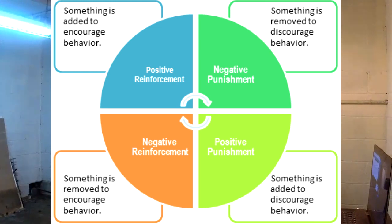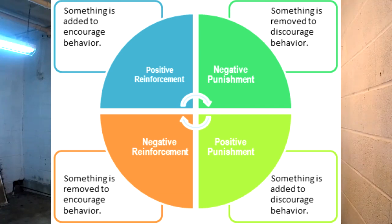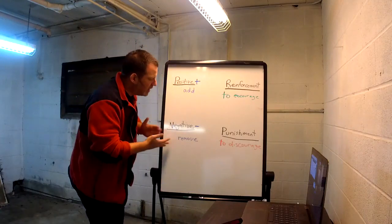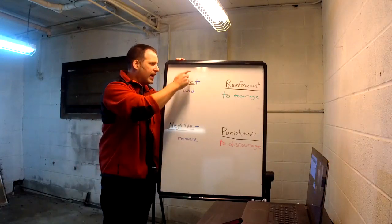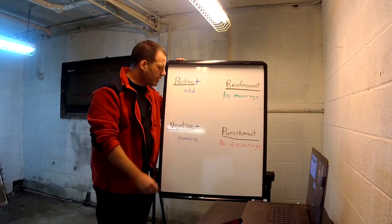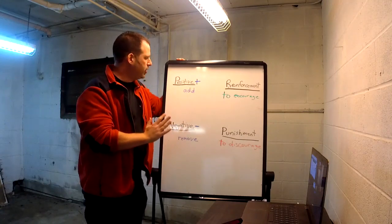What you want to remember with operant conditioning is to break it down into small pieces. The smaller pieces you break down the terminology, the easier it's going to make it for you. The first place people go wrong is with the words 'positive' and 'negative.' Never think of positive as good and negative as bad. Think of it more like mathematics — positive just means to add, negative just means to remove.